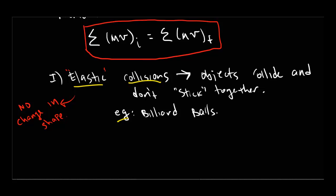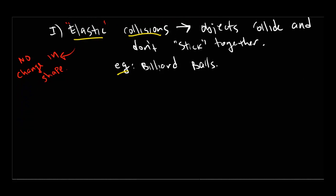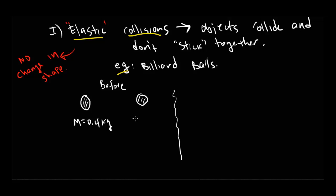Let's look at what this would look like if we apply the momentum conservation principle. We have two billiard balls — ball A and ball B — both with a mass of 0.4 kilograms. Before the collision, billiard ball A is moving at 3 meters per second, and billiard ball B is at rest. Ball A moves and smashes into ball B. After the collision, billiard ball A has slowed down to 1 meter per second, still moving to the right.